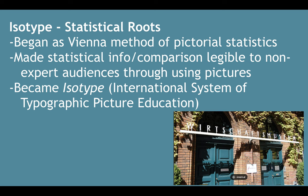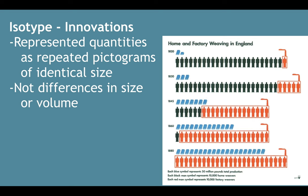There is a museum where some of the work was produced for the original isotypes. In terms of its innovations, it specifically represented quantities as repeated pictograms of identical size, instead of differences in size or volume to show a quantity. As you see on the right in this 'Home and Factory Weaving in England,' the shape of the person is exactly the same — it's just multiplied and the colors are changed.